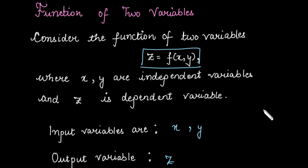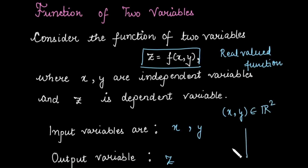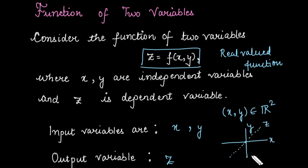Whenever we are dealing with x and y variables, those are independent variables — meaning we need two inputs, so we take them as an ordered pair (x, y). When we define a function of two variables, we generally deal with a real-valued function. Real-valued function means whatever output we are having must be real. Taking x and y as real numbers, we can say they belong to R², meaning the xy-plane. Once we take any value from this plane, we get an output stored in the z-axis, and we are dealing with a 3D coordinate system.